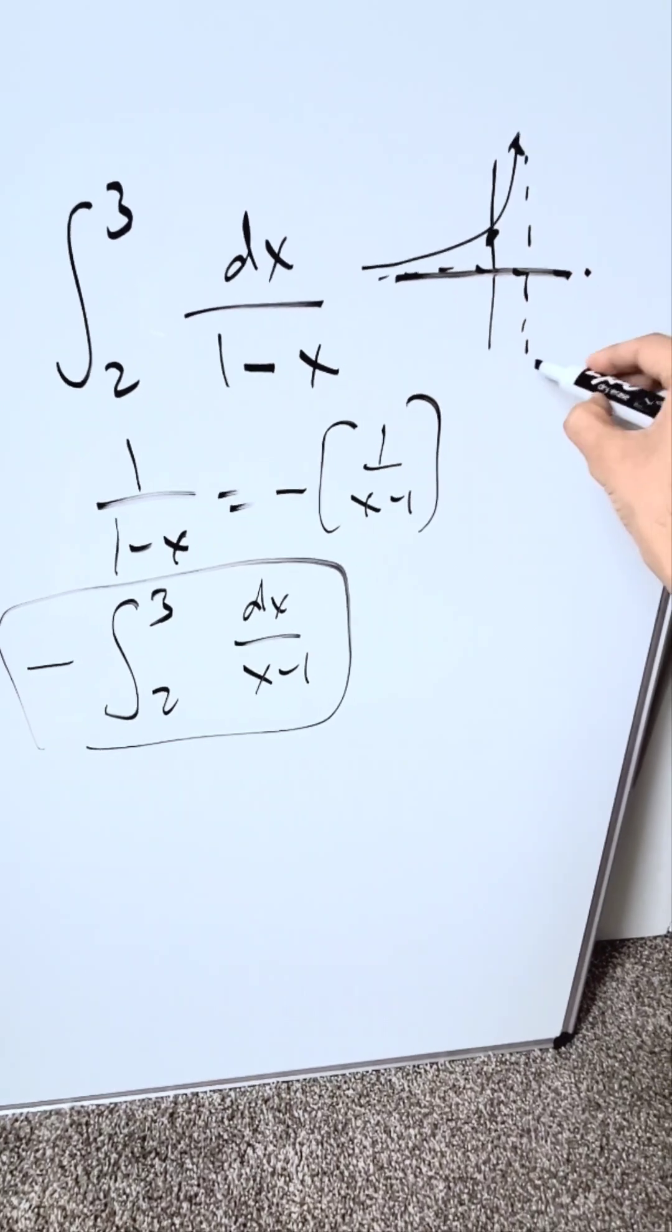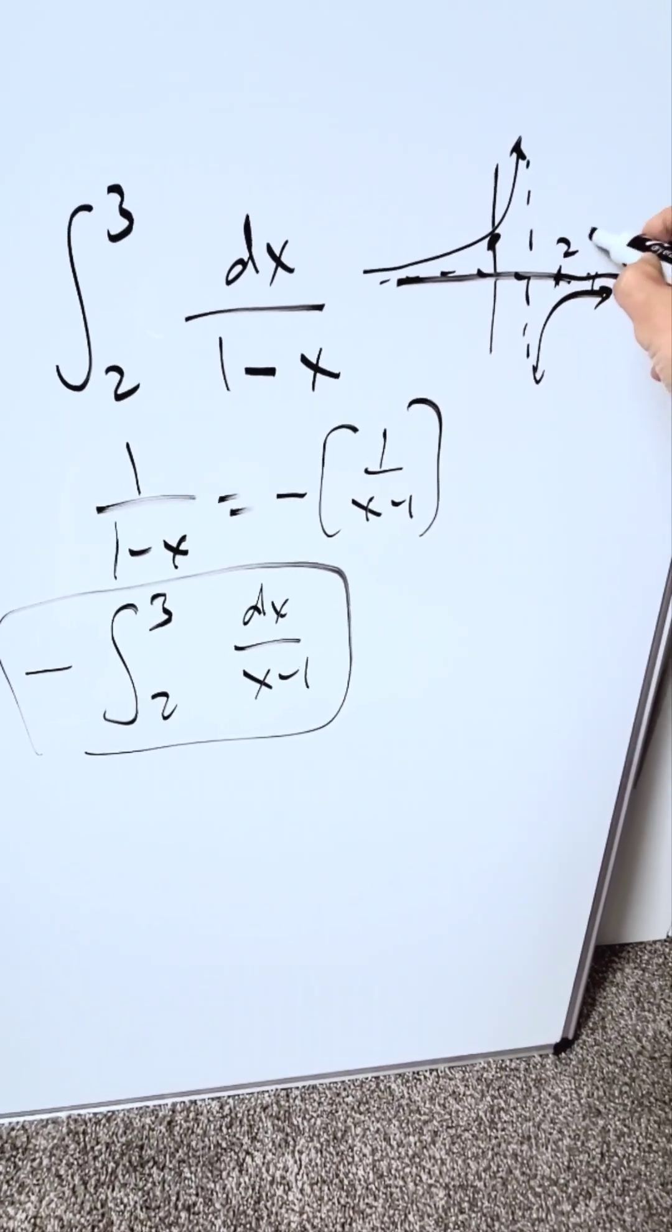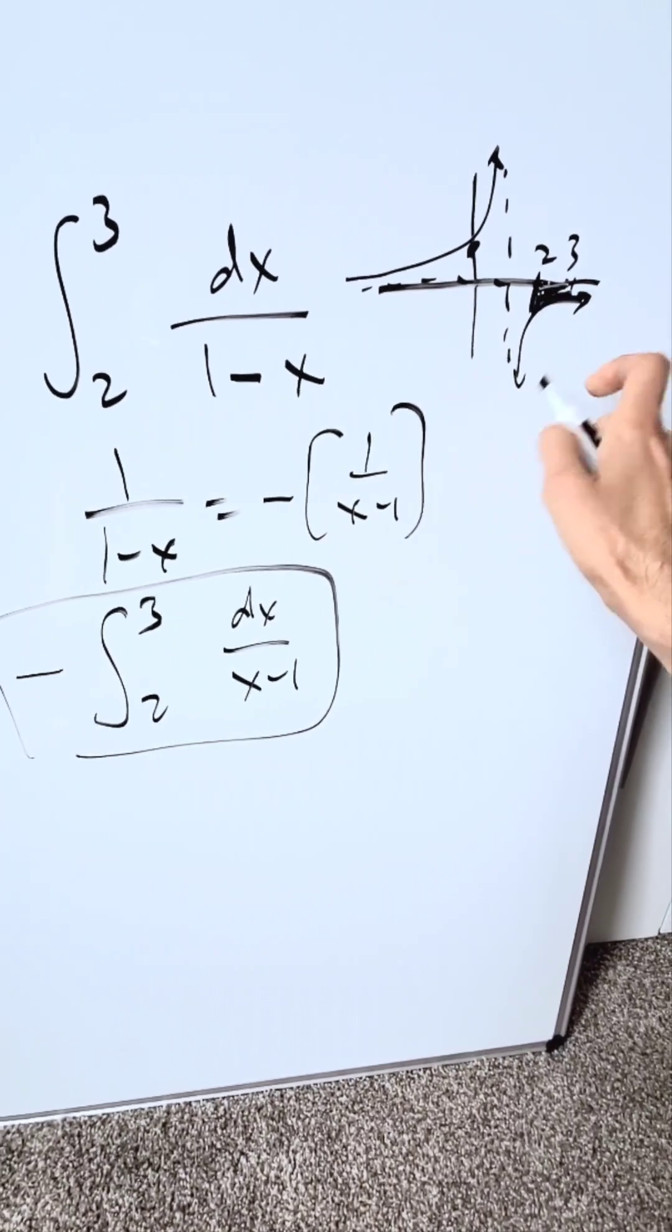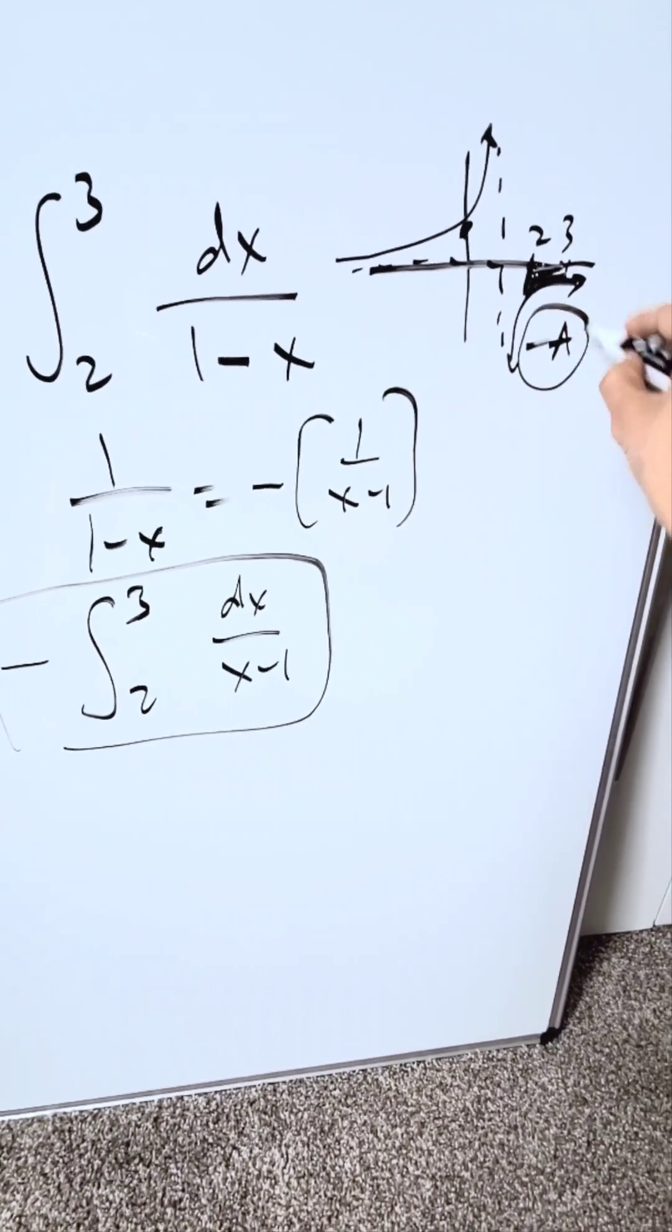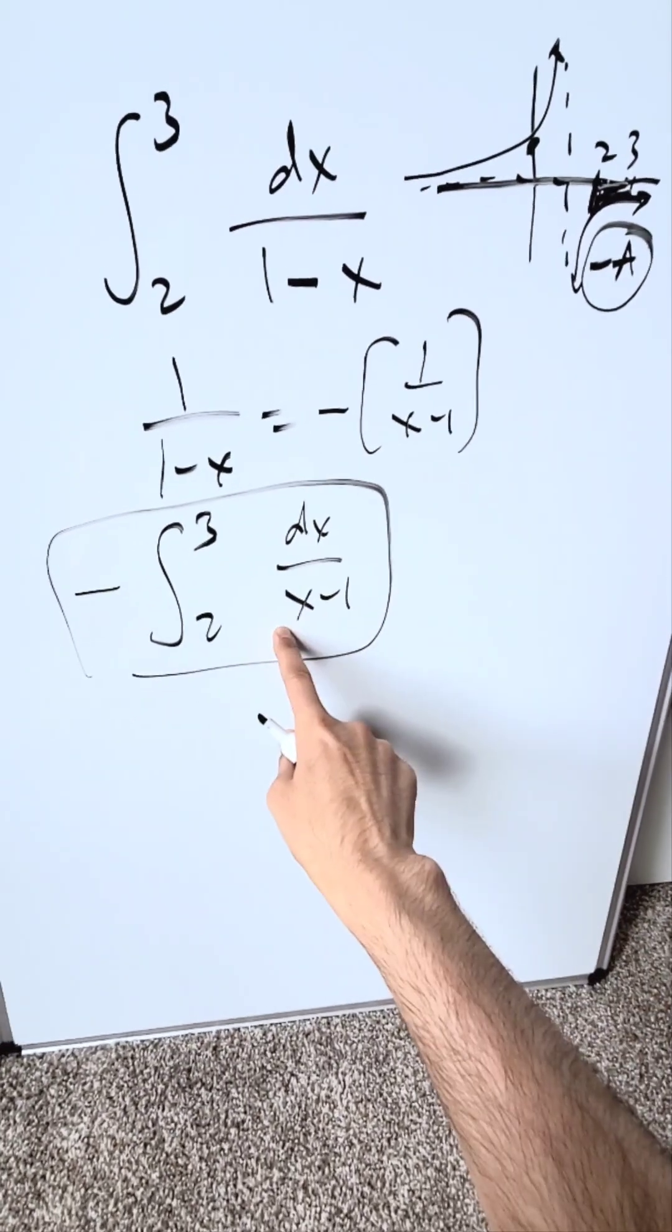You're looking at a function which looks something like this and then like this. I'm looking at it from 2 to 3. If this is 2, this is 3, I have here an entirely shaded region but below the x-axis. Therefore, I should have a negative area as my end result, and I will by looking at this.